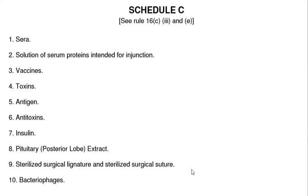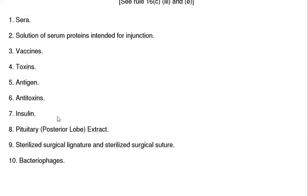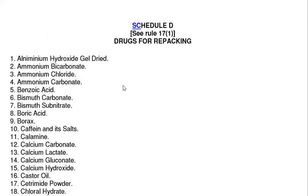Schedule C drug classification: Schedule C drugs, according to the Drug Rules for Licensing, Advertisement and Promotion 1976, include serums, solutions of serum protein intended for injection, vaccines, toxins, antigens, antitoxins, insulins, pituitary posterior gland extract, sterilized surgical sutures, bacteriophages, and drugs used in repackaging.